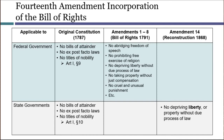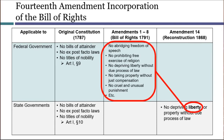A few decades after Cruickshank, more and more people began to believe that it was wrong to allow states to ignore rights that the federal government was required to respect. So lawyers and judges gradually turned their focus to the 14th Amendment Due Process Clause. That clause said, among other things, that states could not deprive people of liberty without due process. Under this theory, the word 'liberty' incorporated the ideas from the original Bill of Rights — the same kind of incorporation by reference you might see in a contract or a civil complaint, where words in one document are incorporated into another without repeating them word by word.